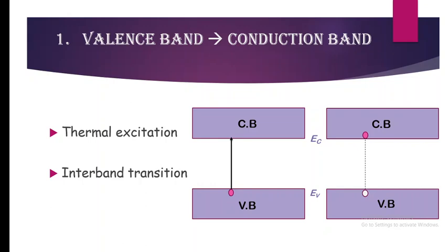The transition takes place between these two different bands. We get a conduction electron as well as a hole; both are free to move and contribute to conductivity. This is the case mainly in intrinsic semiconductors.